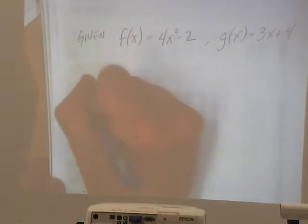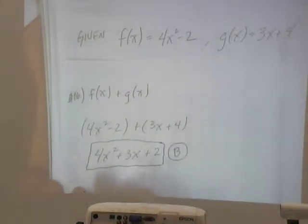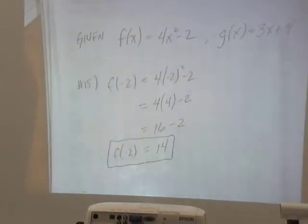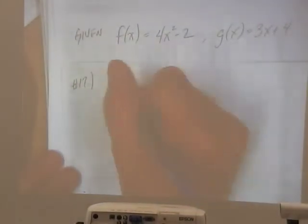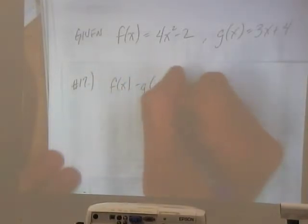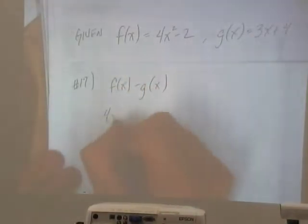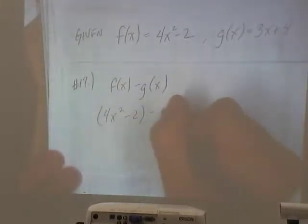All right, number 17. They want us to find f of x minus g of x. So that's 4x squared minus 2. They want us to subtract all of g of x.